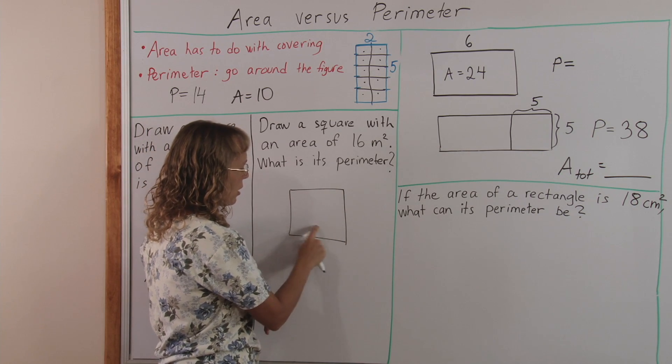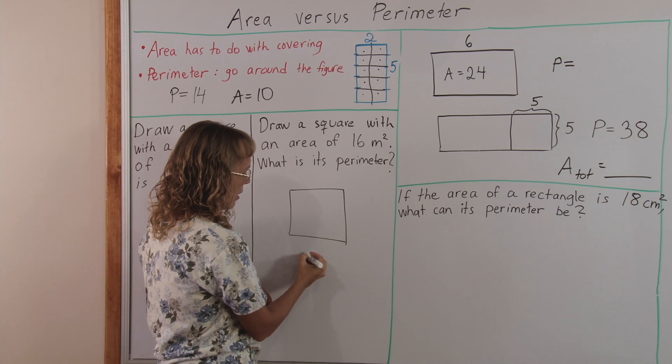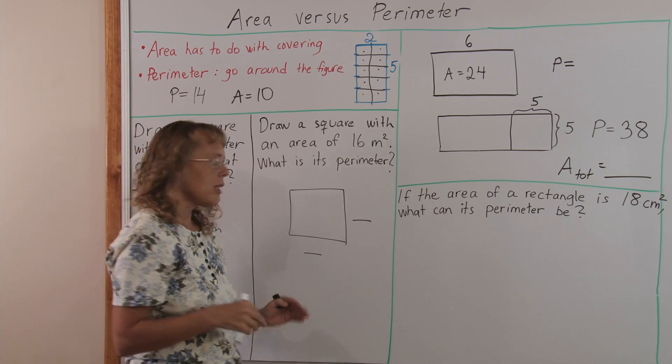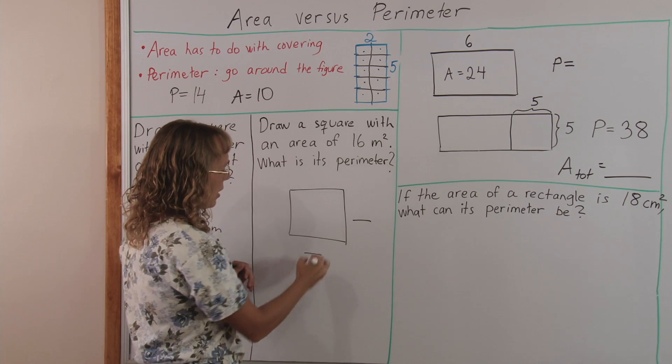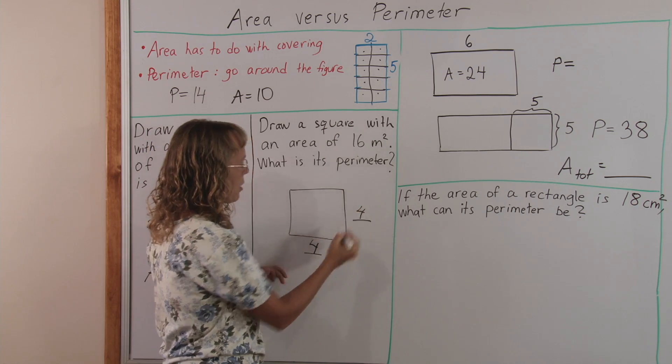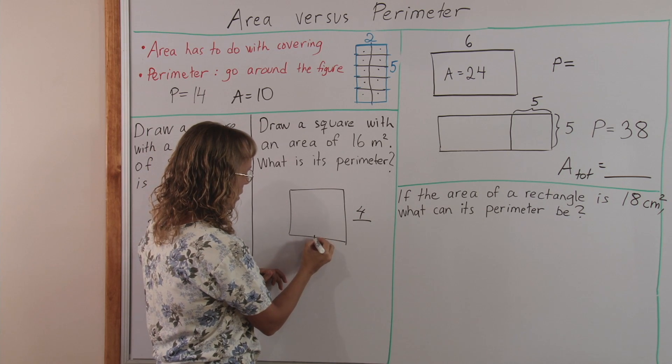Now we need to think of a number that this number times this number, this times this will give us sixteen, and it's the same number, it's not two times eight. And it's easy to see, if you know your multiplication tables, that four will work. Four times four is sixteen.